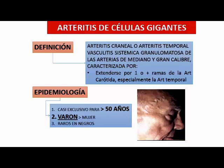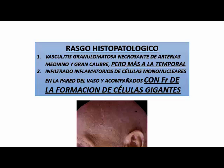El rasgo histopatológico es una vasculitis granulomatosa de arterias de mediano y gran calibre, con infiltrado inflamatorio y frecuente formación de células gigantes. O sea, tiene esta característica de formación de células gigantes con mucha frecuencia.